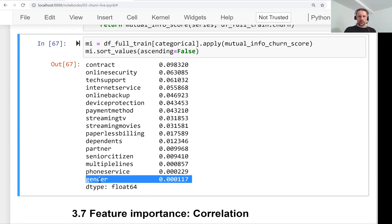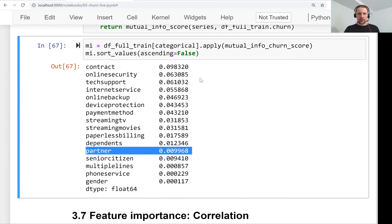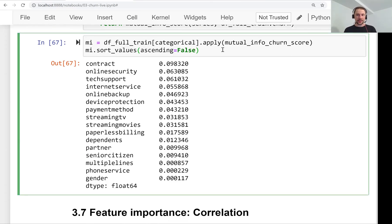Variables like online security, tech support, and internet service are quite important—they're relatively important—and it goes all the way down to not important ones like gender, phone service, multiple lines, and senior citizen. We see that there is a jump from multiple lines to senior citizen—it's like one order of magnitude jump. We see that partner seems quite important, but in relative terms, it's not one of the most important ones.